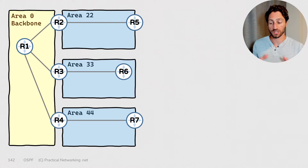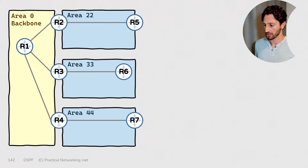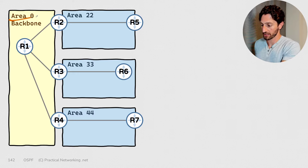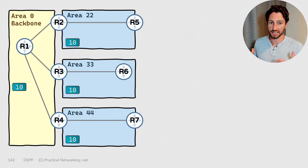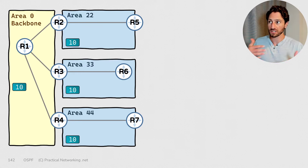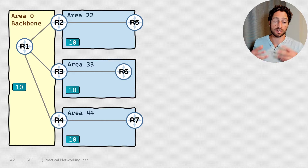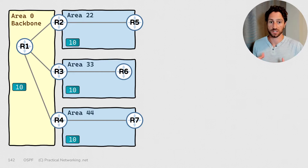With that out of the way, let me describe the topology we'll be using in this lesson and all the LSAs that exist in each of these areas. Our topology has four areas: area 0, connected to area 22, 33, and 44. Within this topology, we're going to say there are 10 IP subnets that exist inside each of these areas, shared within the areas using type 1 and type 2 LSAs. The ABRs are going to summarize the information in each area to the other areas in the topology.